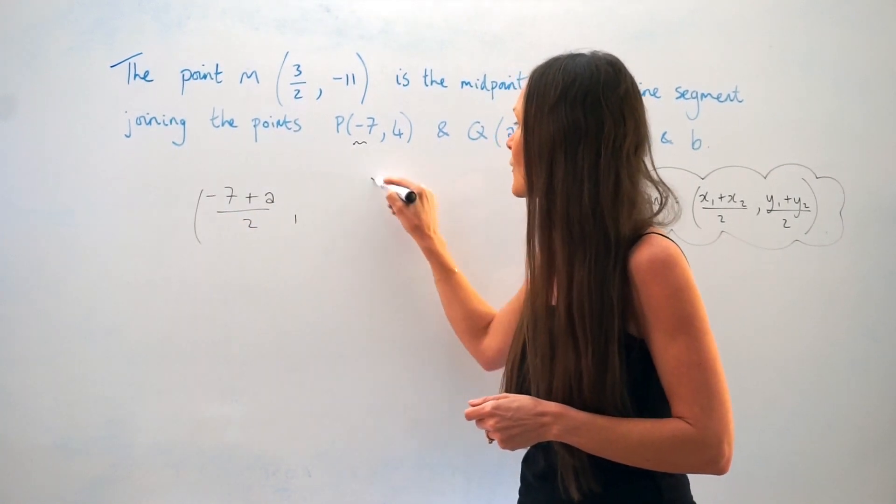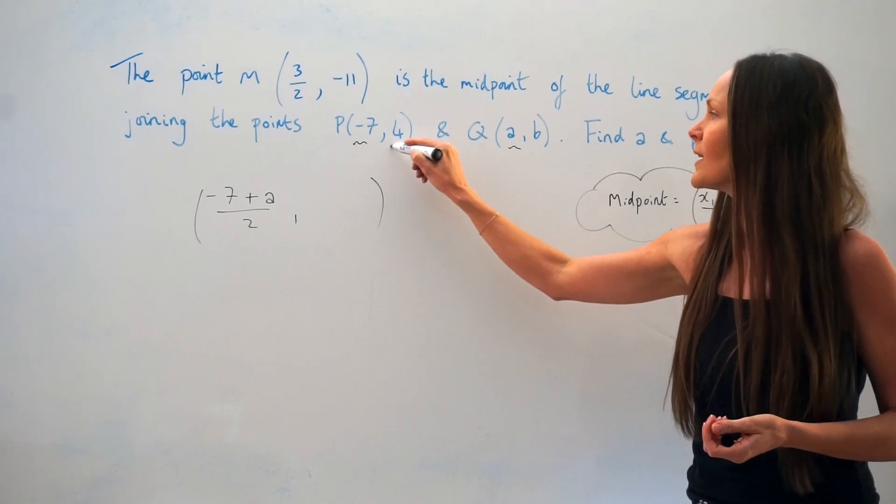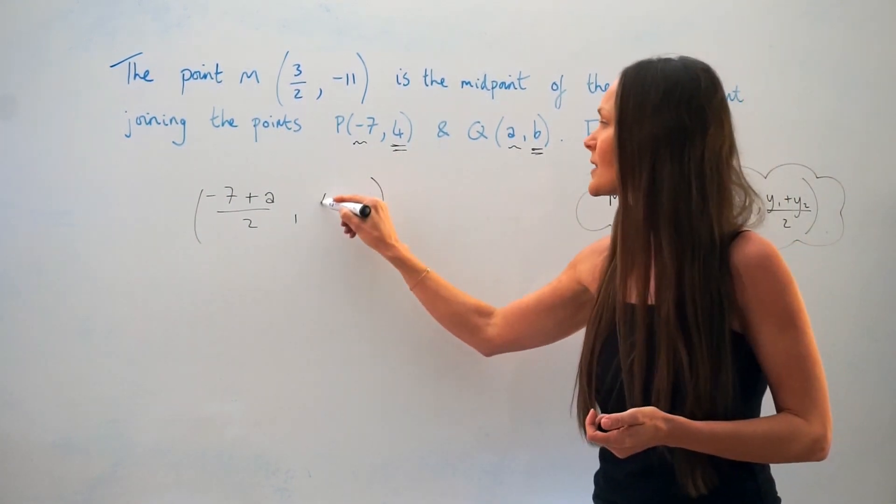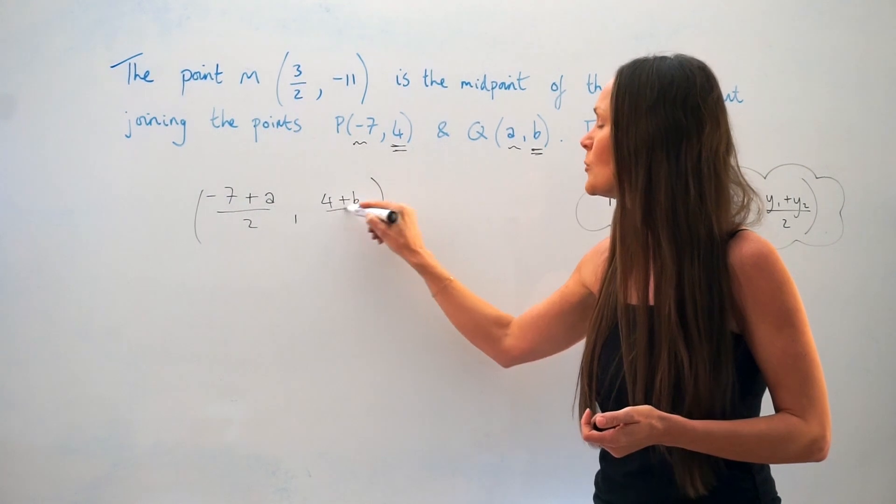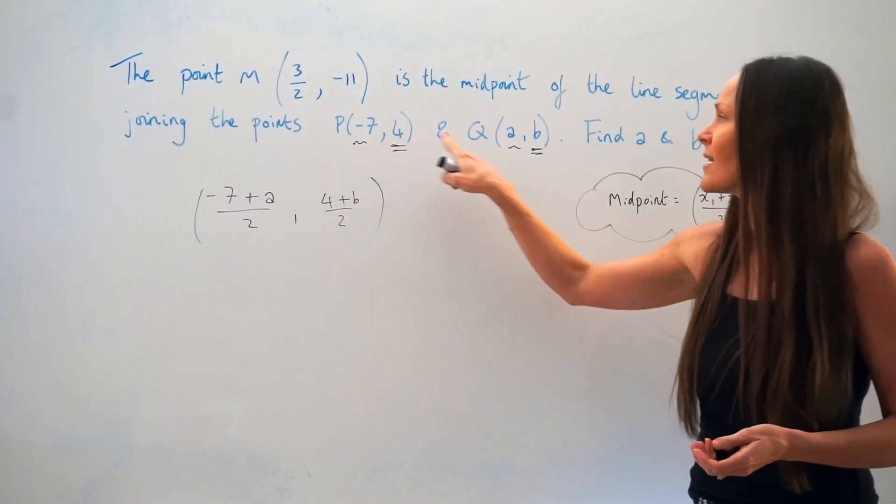Then to work out the y value of the midpoint, you would take the two y values, so 4 and B, add them together and then divide by 2 again. So that is how you would calculate the midpoint of this line segment.